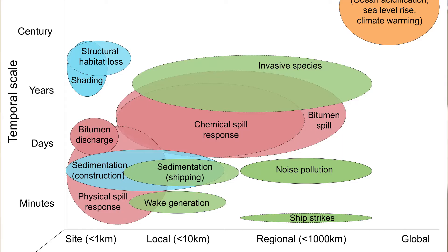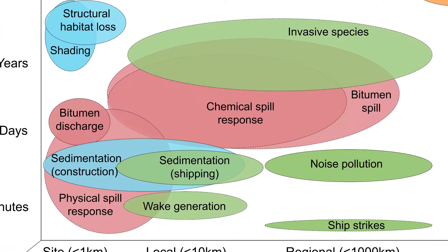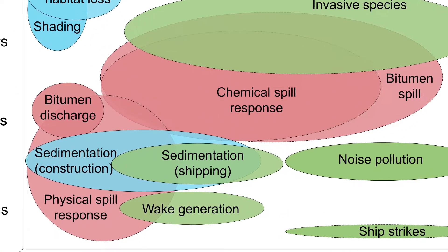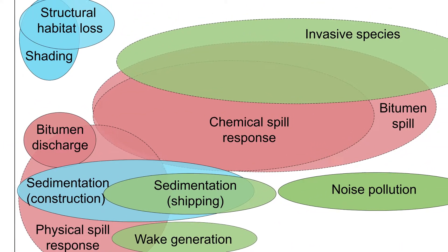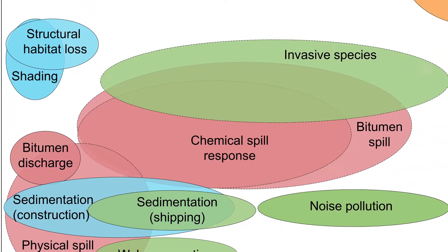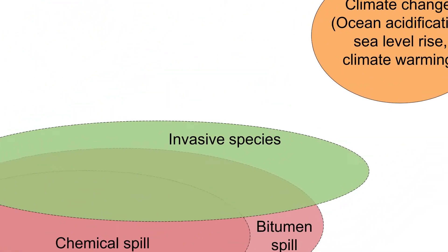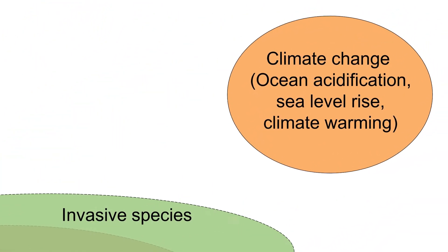We found that there are actually 15 different ways that oil sands development can affect ocean ecosystems. Three of those are caused by climate change — through acidification of our oceans, increasing ocean temperatures, and increasing sea levels due to melting ice caps.